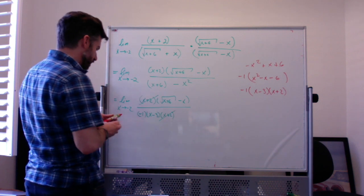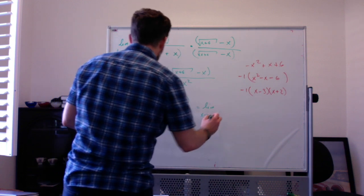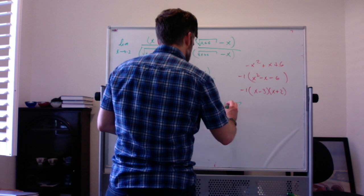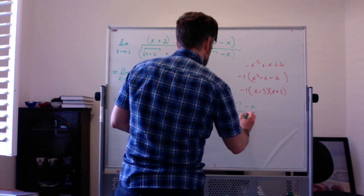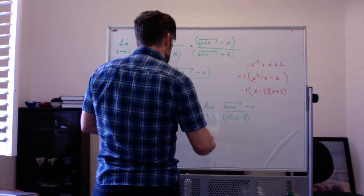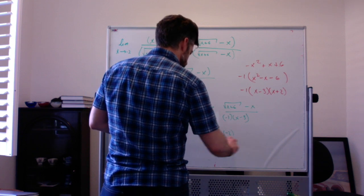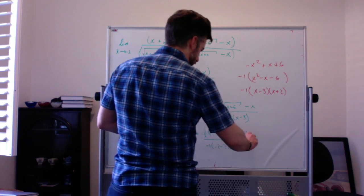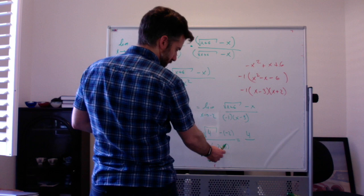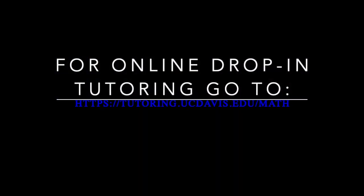This x plus 2 cancels with that x plus 2, leaving the limit as x goes to negative 2 of the square root of x plus 6 minus x, all over negative 1 times x minus 3. Plugging in negative 2: the square root of negative 2 plus 6 is the square root of 4, which is 2, minus negative 2, giving 4 on top. And negative 1 times negative 2 minus 3 is negative 1 times negative 5, which is positive 5 on the bottom. So I get 4 fifths.